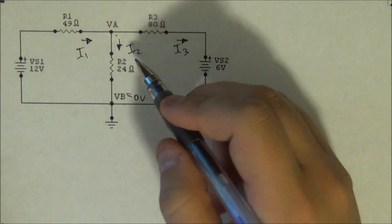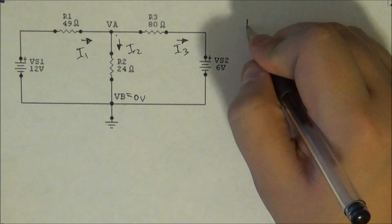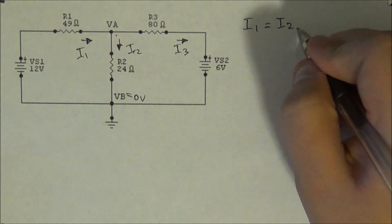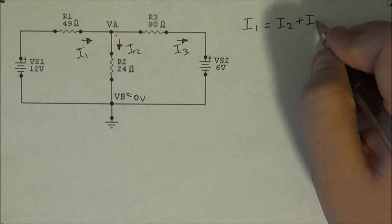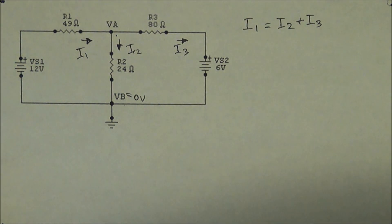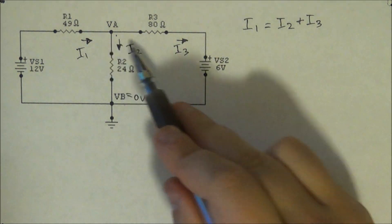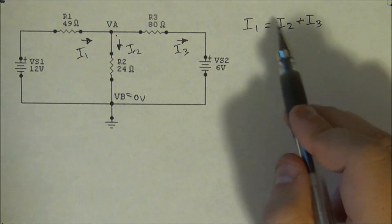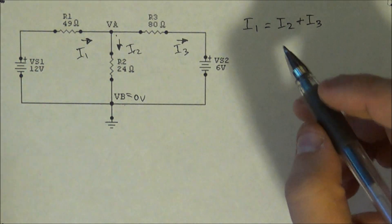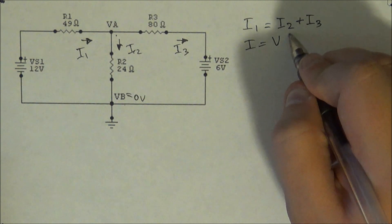To start the nodal analysis at VA, you're going to write the current equations. You have I1 comes in, and then you have I2 plus I3 coming out. This comes from Kirchhoff's current law — whatever currents come in are equal to whatever currents come out. Nothing too difficult.